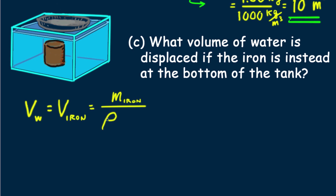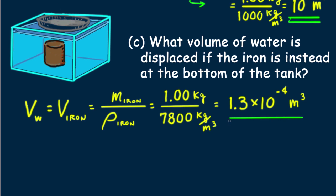We're not told iron's volume, but we know its mass and density. So the volume of water displaced equals the volume of the piece of iron. Equals 1 kg over 7800 kg per meter cubed equals 1.3 times 10 to the minus fourth meters cubed. And we have the solution. The volume of the iron and water displaced is less than the size of a baseball.